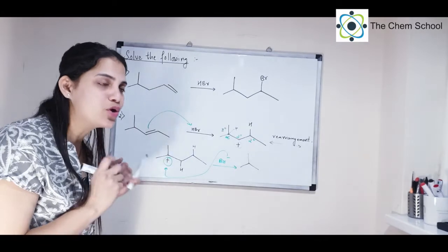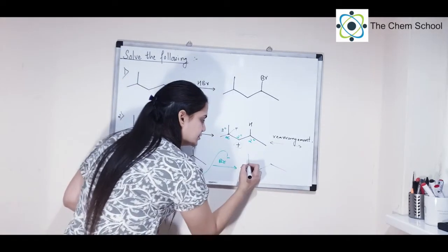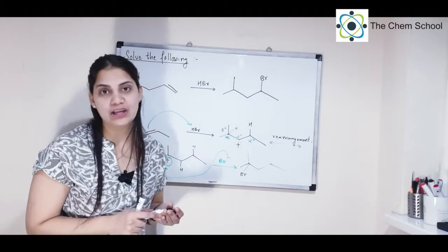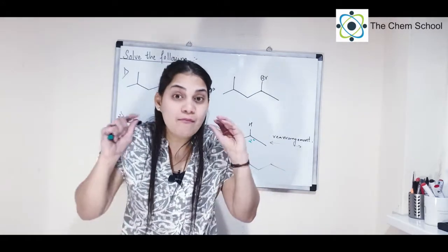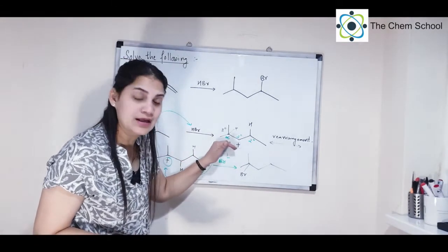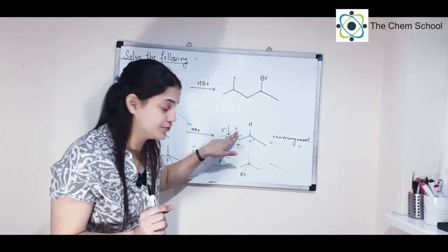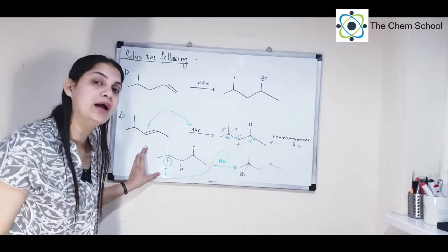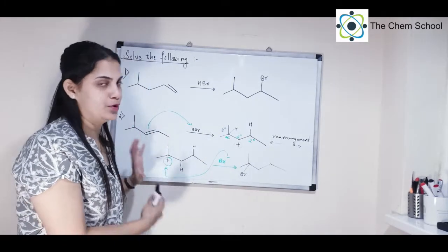After rearrangement, the Br attacks the newly formed tertiary carbocation at that site, giving the major product with Br at that particular position. This is why you cannot just rely on the shortcut for complex cases. Remember: always prepare the most stable carbocation first, check the neighboring alpha position for possible rearrangement (only if the alpha carbon has a hydrogen for hyperconjugation), shift the carbocation there if more stable, then let the nucleophile attack to get your major product.